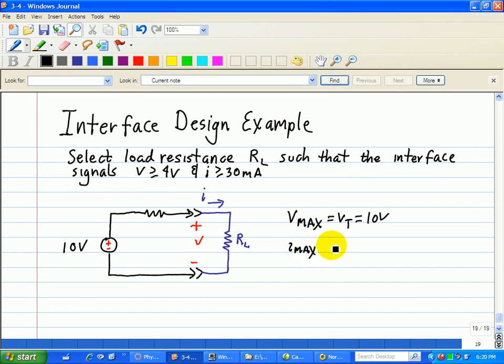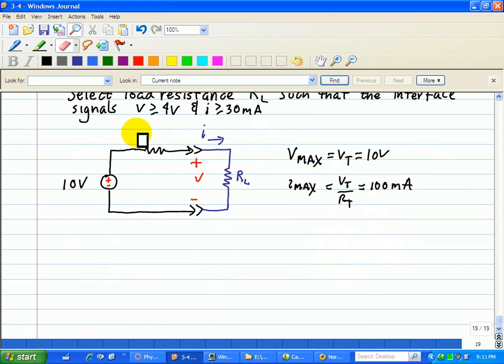Imax is given as VT over RT, which is equal to 100 milliamps, where RT is equal to 100 ohms.